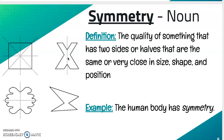Symmetry. The definition is the quality of something that has two sides or halves that are the same or very close in size, shape, and position. Example: The human body has symmetry.